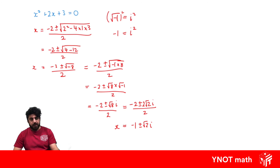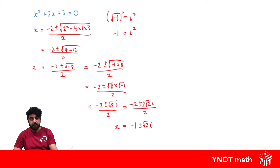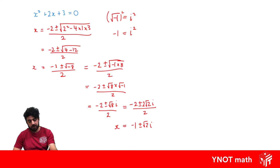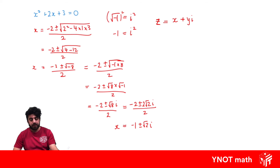Now, we're going to define a complex number as having a real part and an imaginary part. It's important to know that when we define i as the square root of negative 1, that's an imaginary number, but a complex number consists of both a real number and an imaginary number. For example, if we have a complex number z, this will consist of a real part and an imaginary part, and we can write it as x plus yi, where x is the real part and yi is the imaginary part.